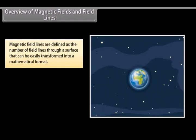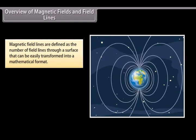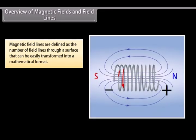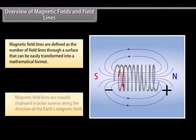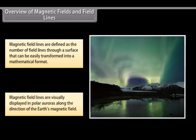These are defined as the number of field lines through a surface. These can be easily transformed into a mathematical format. Magnetic field lines are visually displayed in polar auroras where visible streaks of lines are created along the direction of Earth's magnetic field.